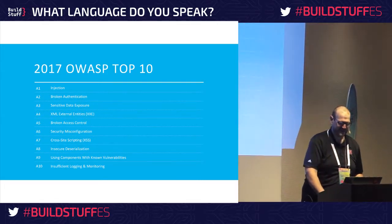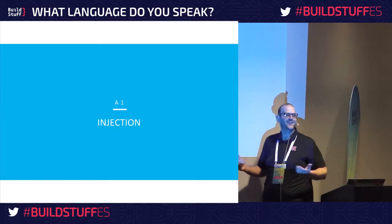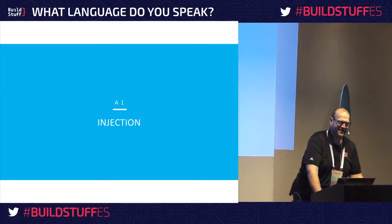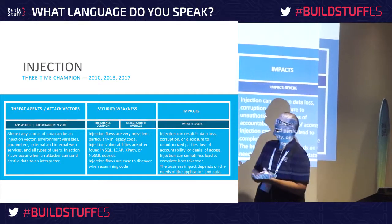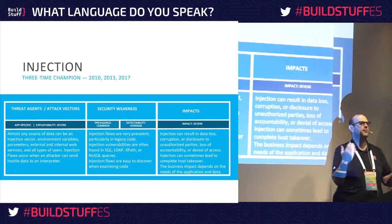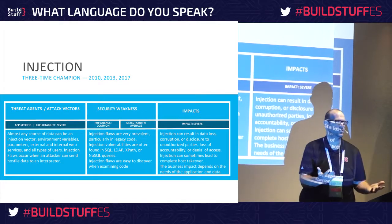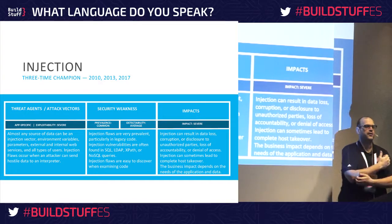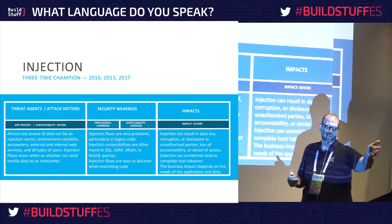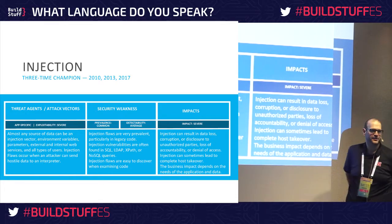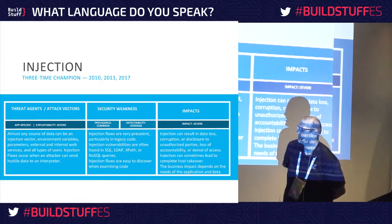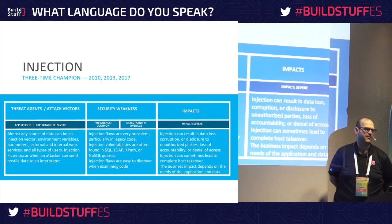Let's start with everybody's personal favorite — number one for four consecutive lists: injection. Injection is probably most familiar as SQL injection, but it also includes XPath injection and LDAP injection if you're working with data sources like Active Directory. The reason it's rated so high is its exploitability is severe — essentially, anybody can send arbitrary data to an interpreter and have it executed.